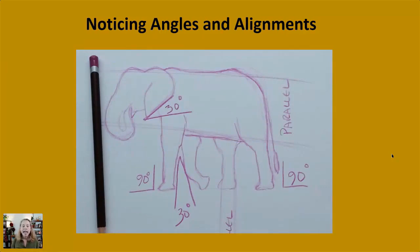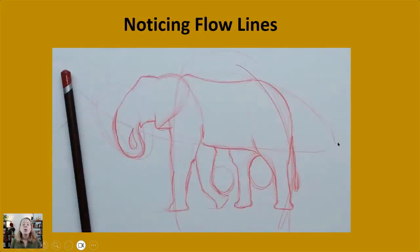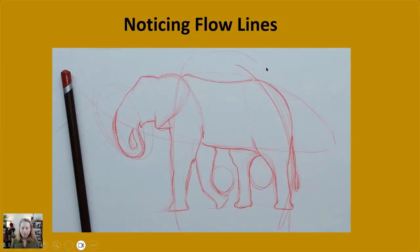Noticing angles and alignments — here's a 90 degree angle between the ground and the leg, there's a 30 degree angle with this ear. And then alignments like noticing the parallel between the line of the back and the line of the belly, and noticing flow lines — the concept of how your pencil would be flowing across that animal. Also thinking about how, if you were a little ant crawling along the top of your elephant, whether that would be a smooth trail or a really bumpy one.